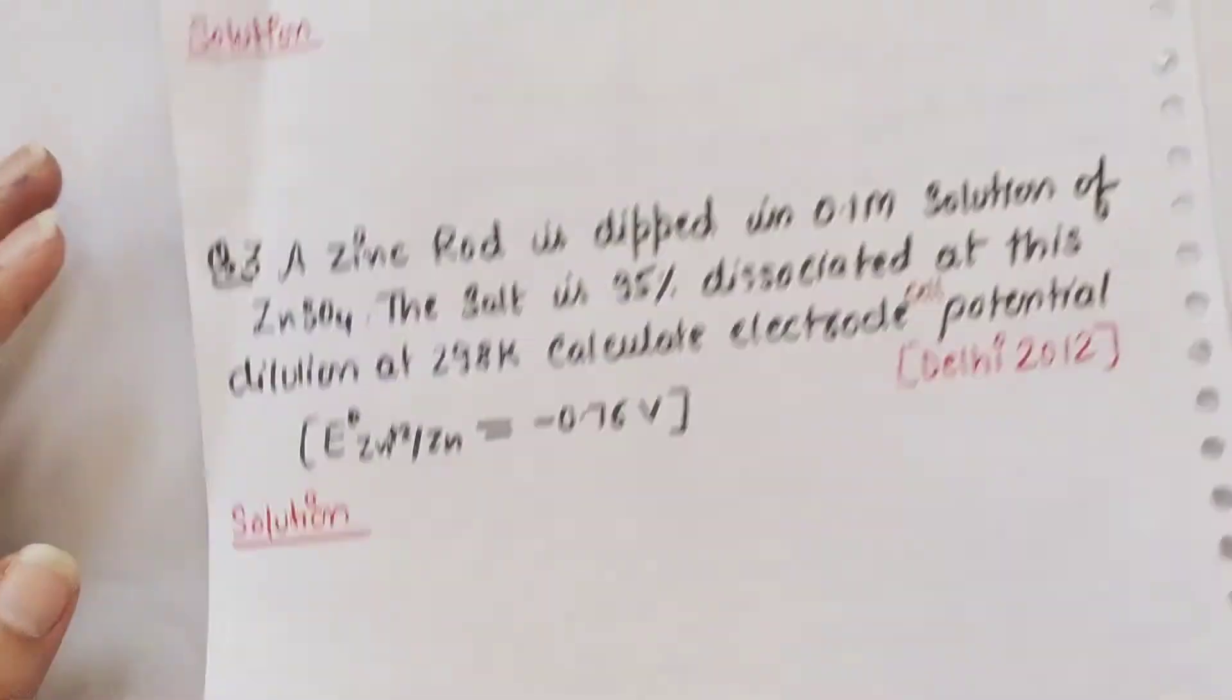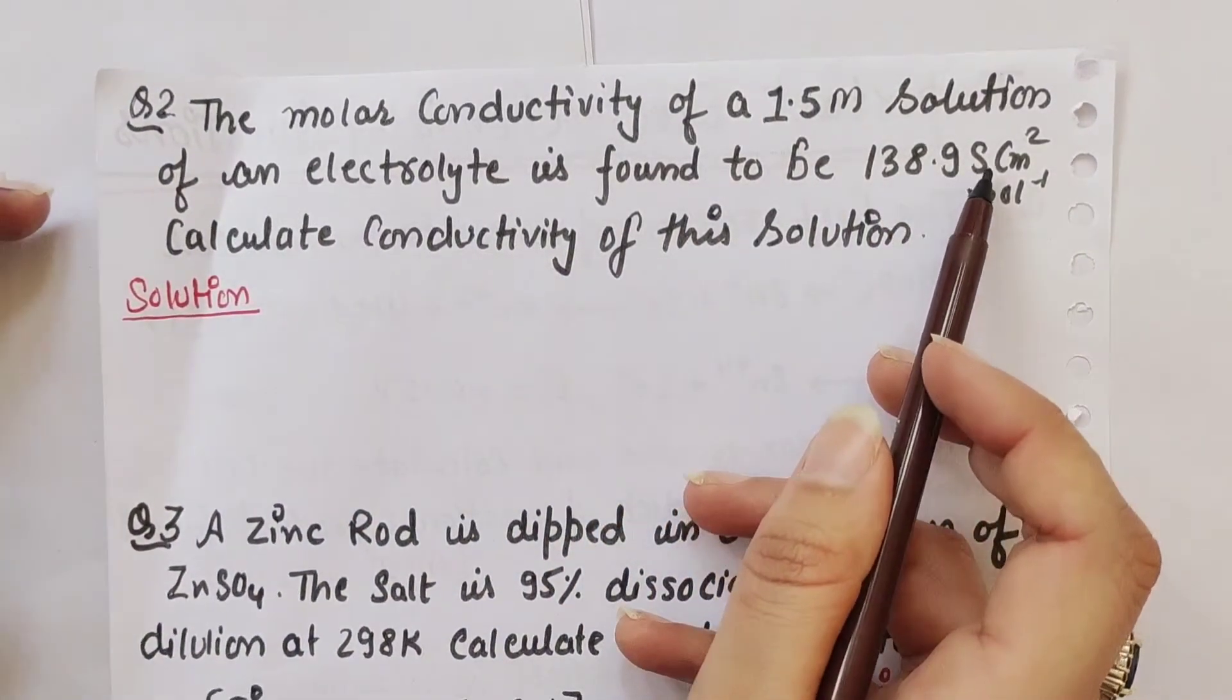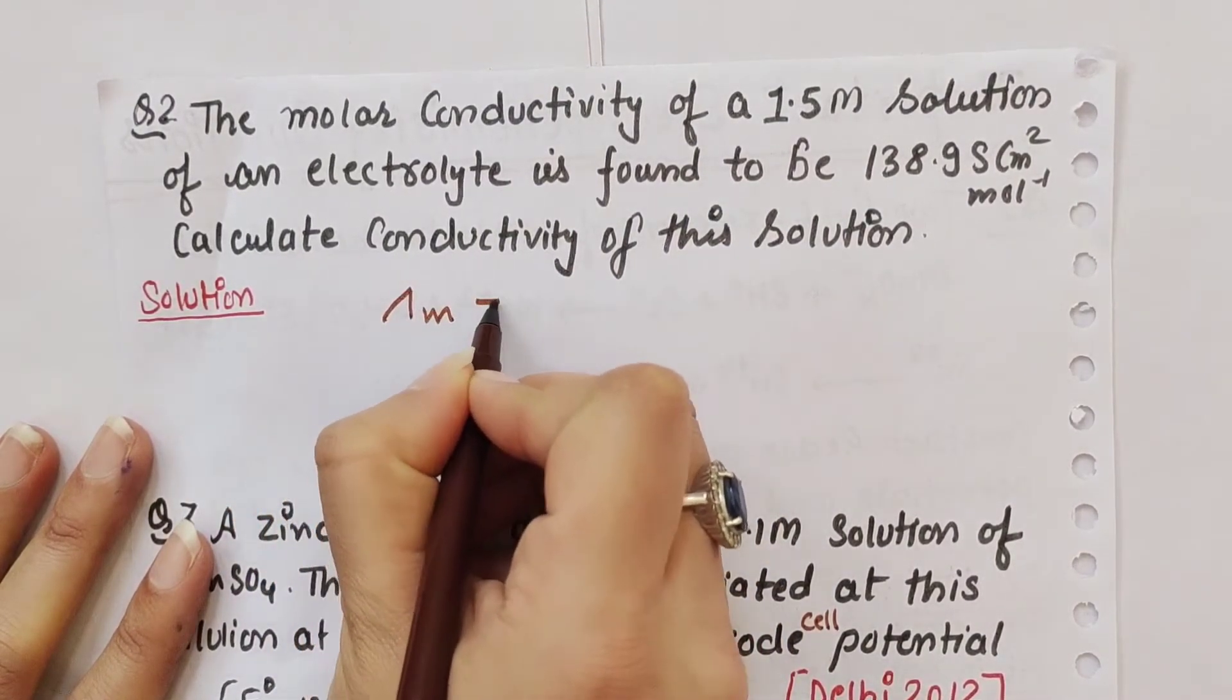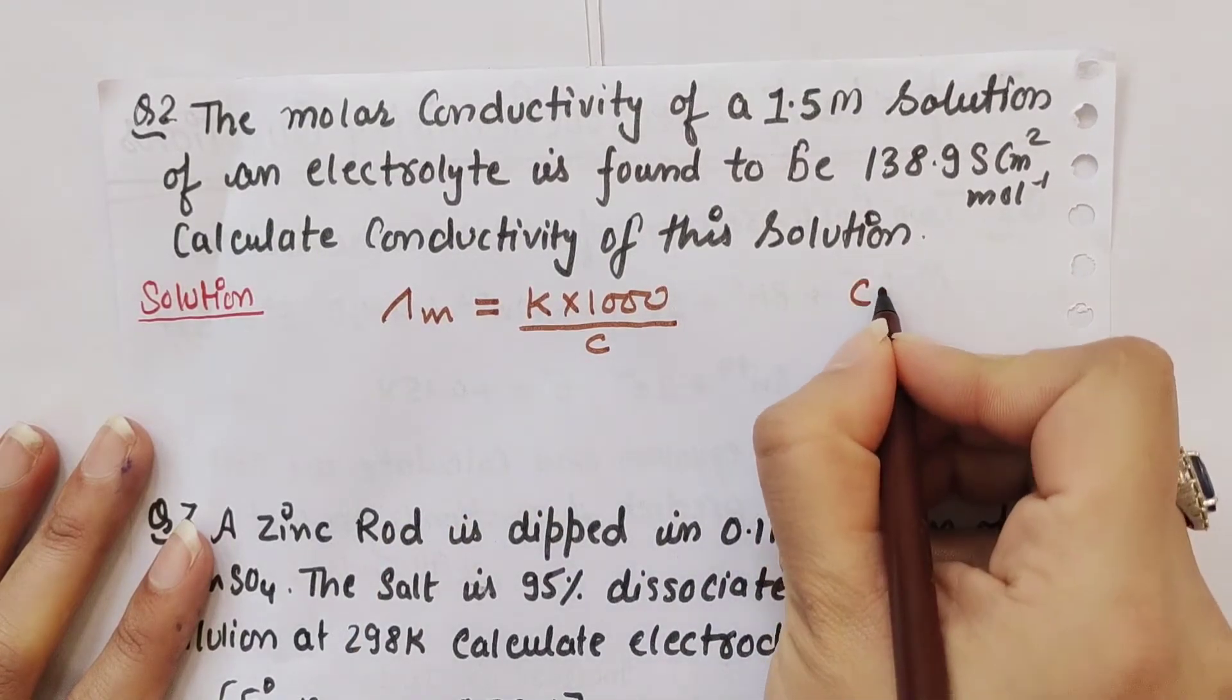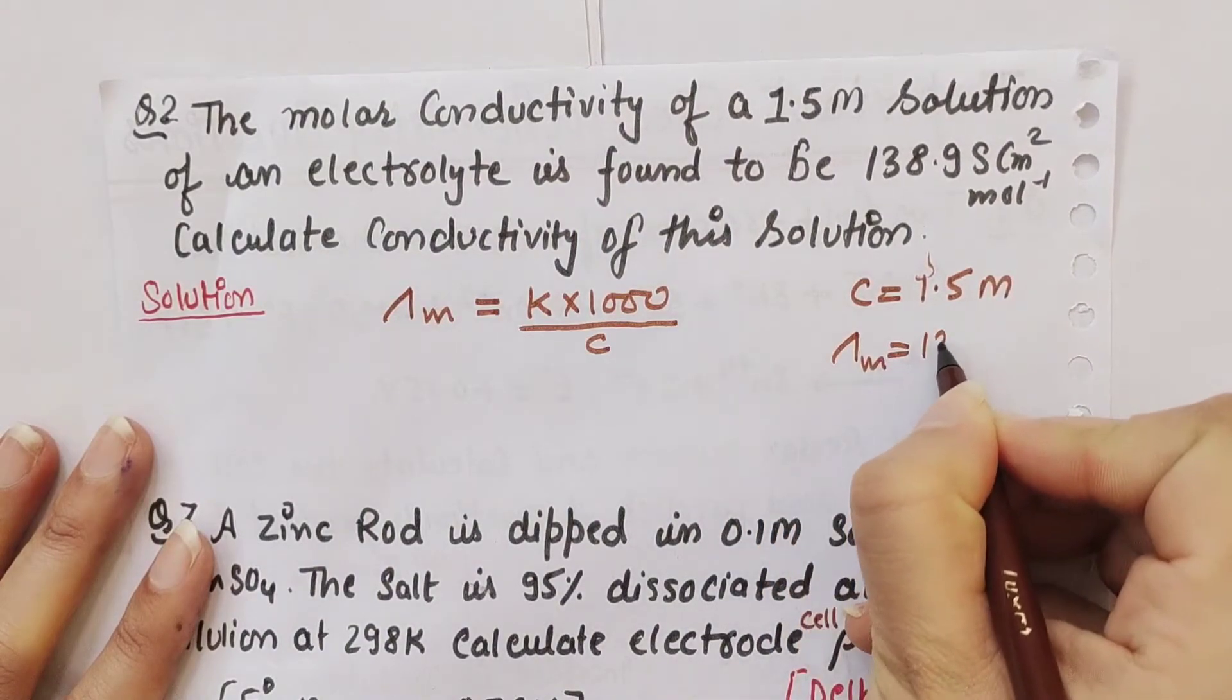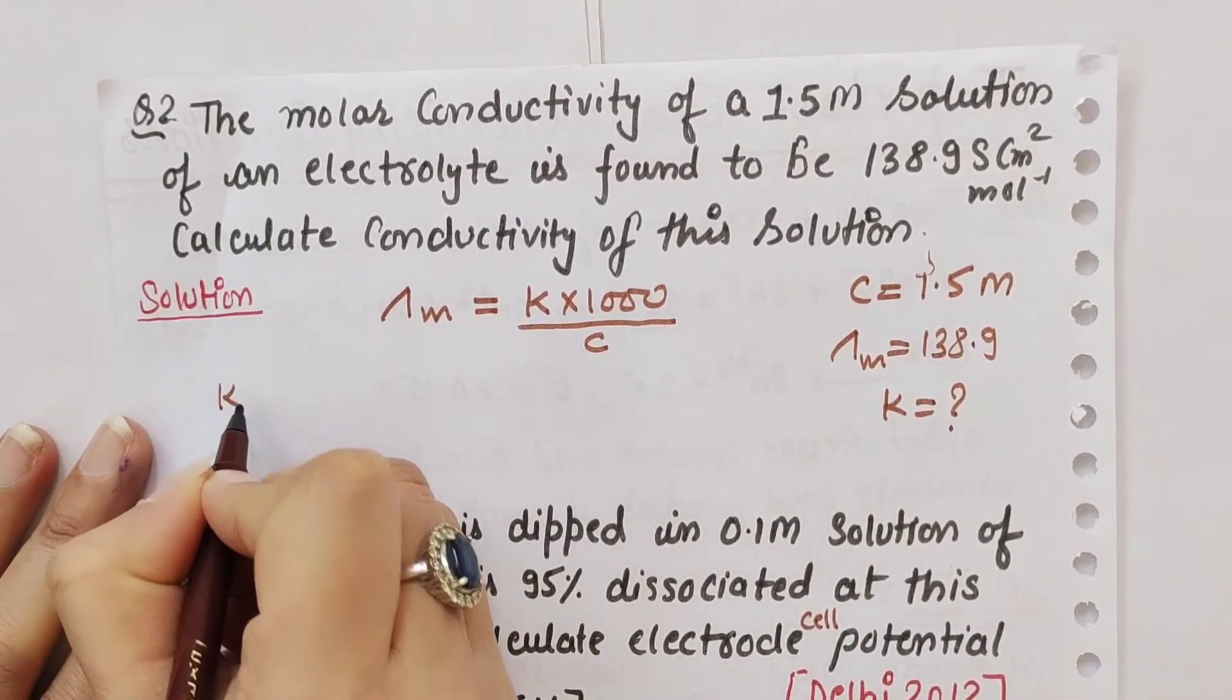Moving to the second question: The molar conductivity of a 1.5 molar solution of an electrolyte is found to be 138.9 siemens centimeter square per mole. Calculate the conductivity of this solution. The formula is: molar conductivity equals κ times 1000 divided by concentration, where concentration means molarity.